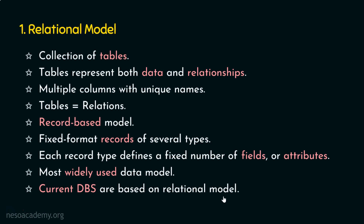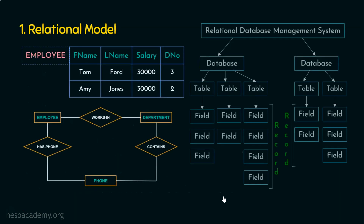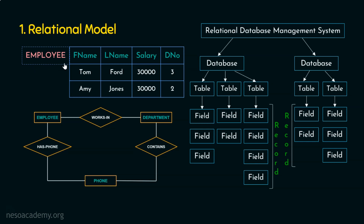Before we step into the next data model, let's see an example. This is the relational database management system, or simply RDBMS, where this database management system is a collection of databases, and databases are collections of tables. A table is a collection of various fields, and the collection of various fields is referred to as a record. For example, an employee table contains four attributes or four columns: first name, last name, salary, and department number.